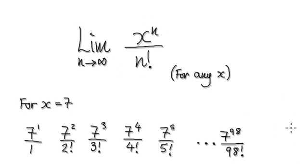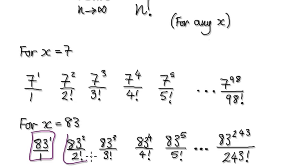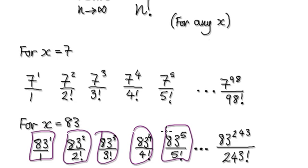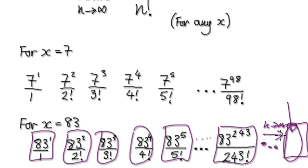So for any given x here, x could be anything. For example, x could be 83. So for your first term it would be this. Second term, third, fourth, fifth, and then blah blah blah — even further than this, even further than this. As n tends to infinity, what would be the value of this fraction here?